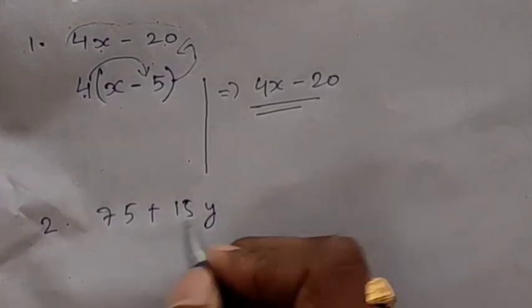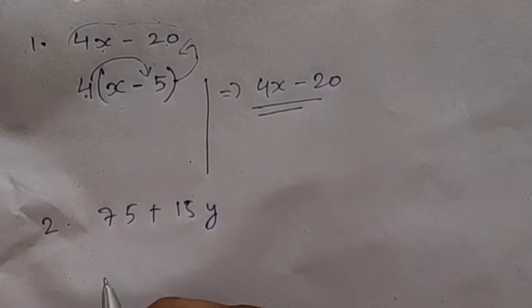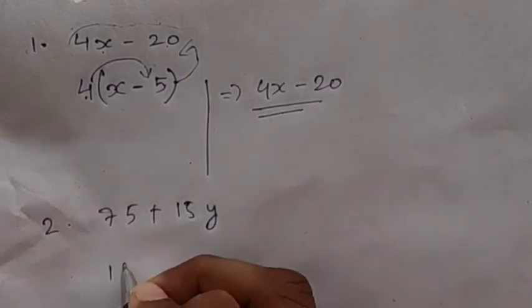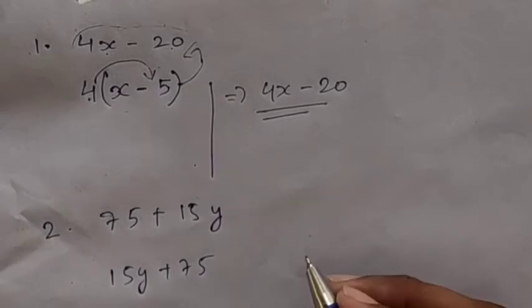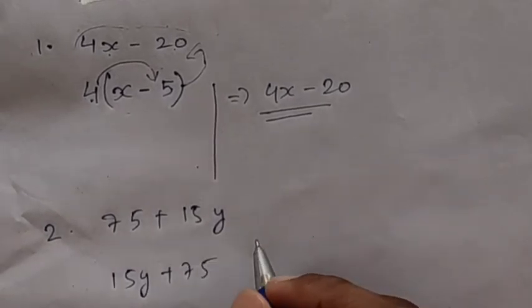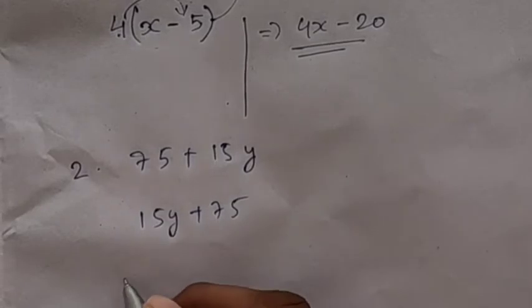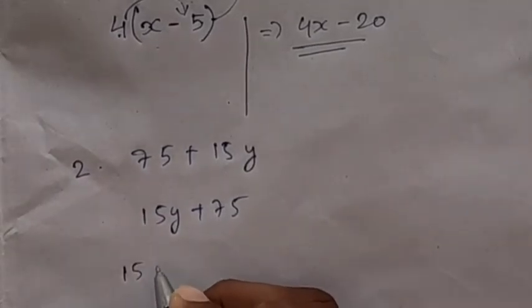Now what we will do? We will take common here. So first let me write this as 15y + 75. It will not make any difference. The value will not change. Now what I will do? I will take 15 common here. So what is left out?